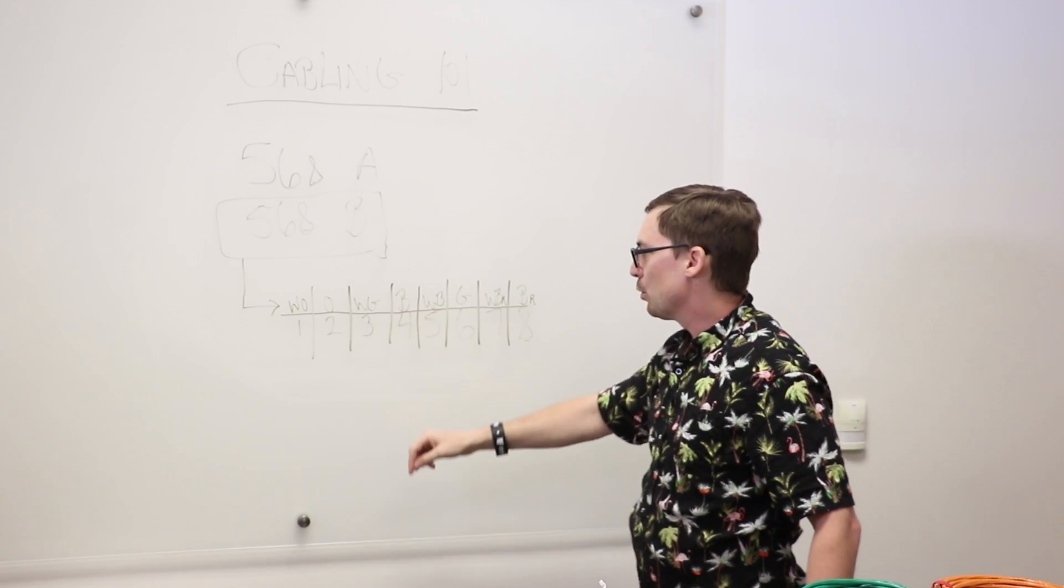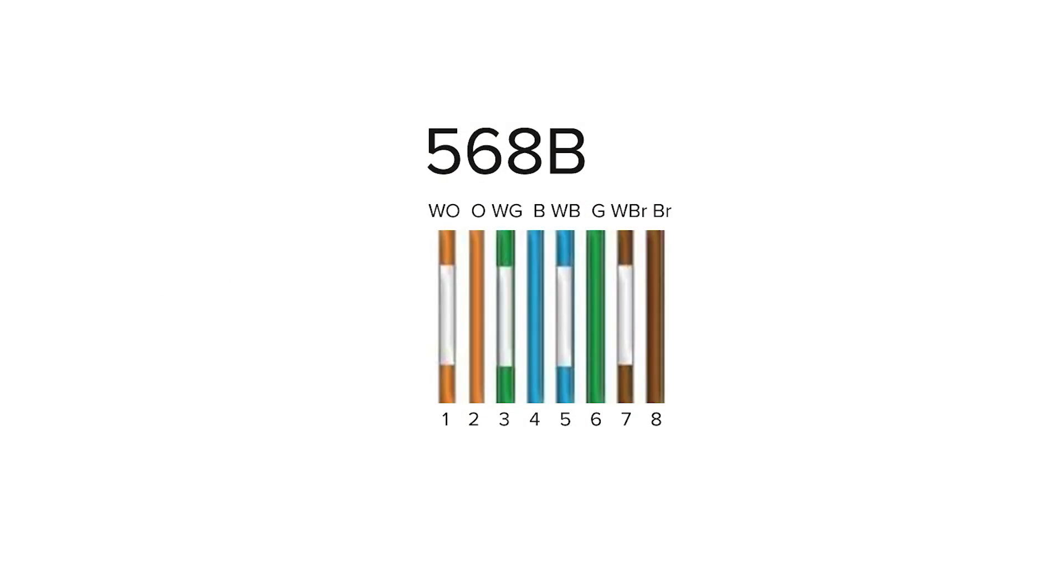That crimping order starts with white orange, orange, white green, blue, white blue, green, white brown, brown.